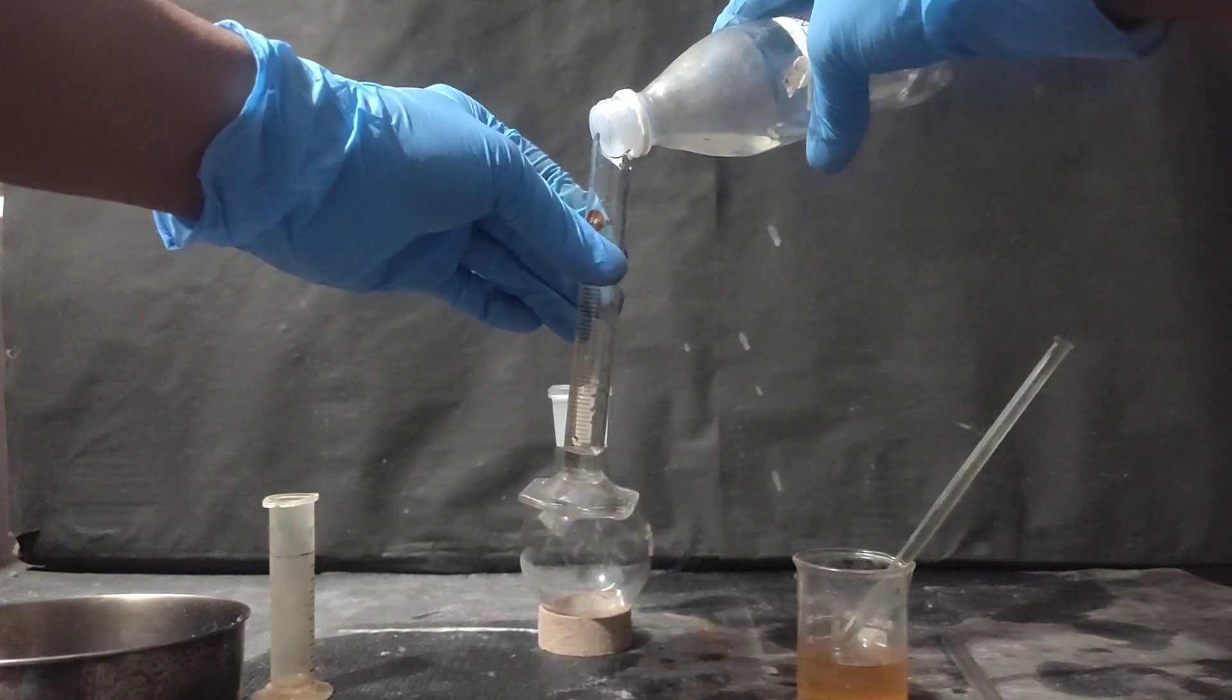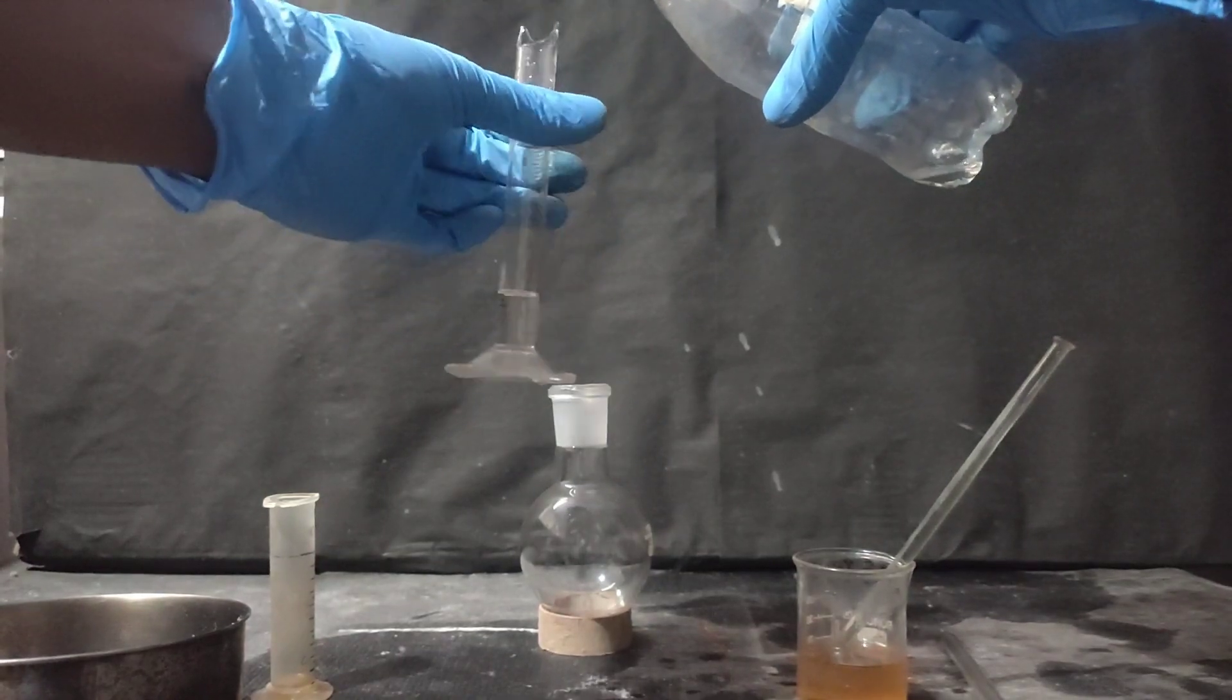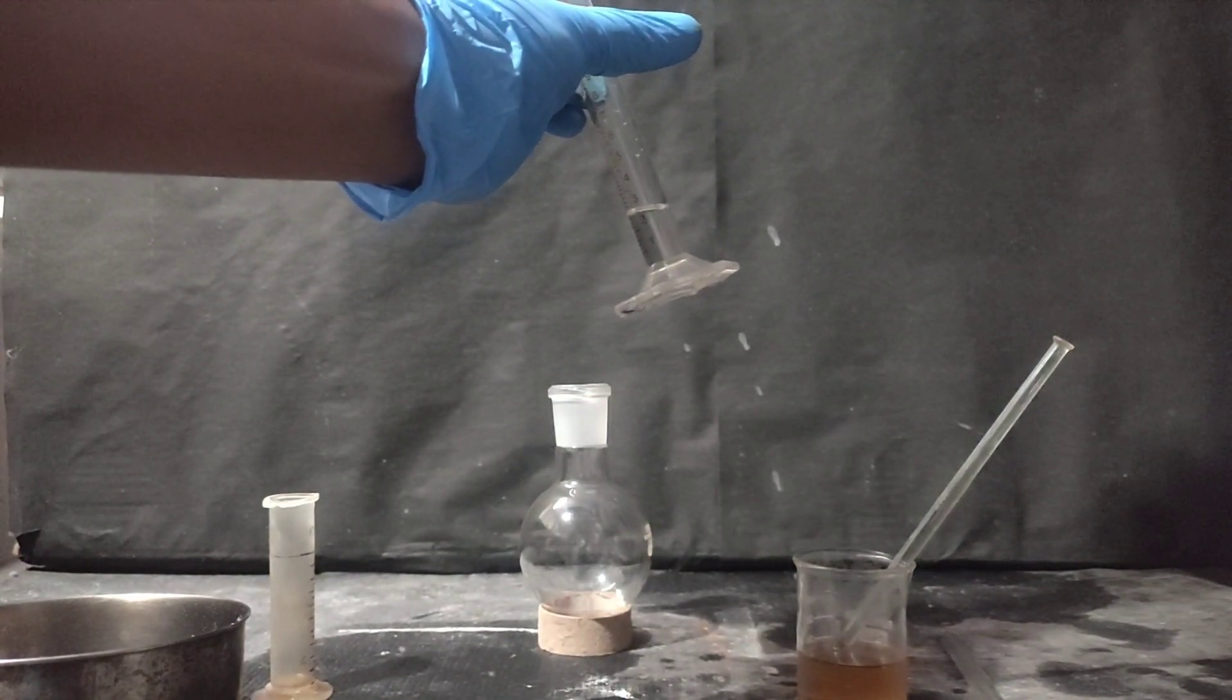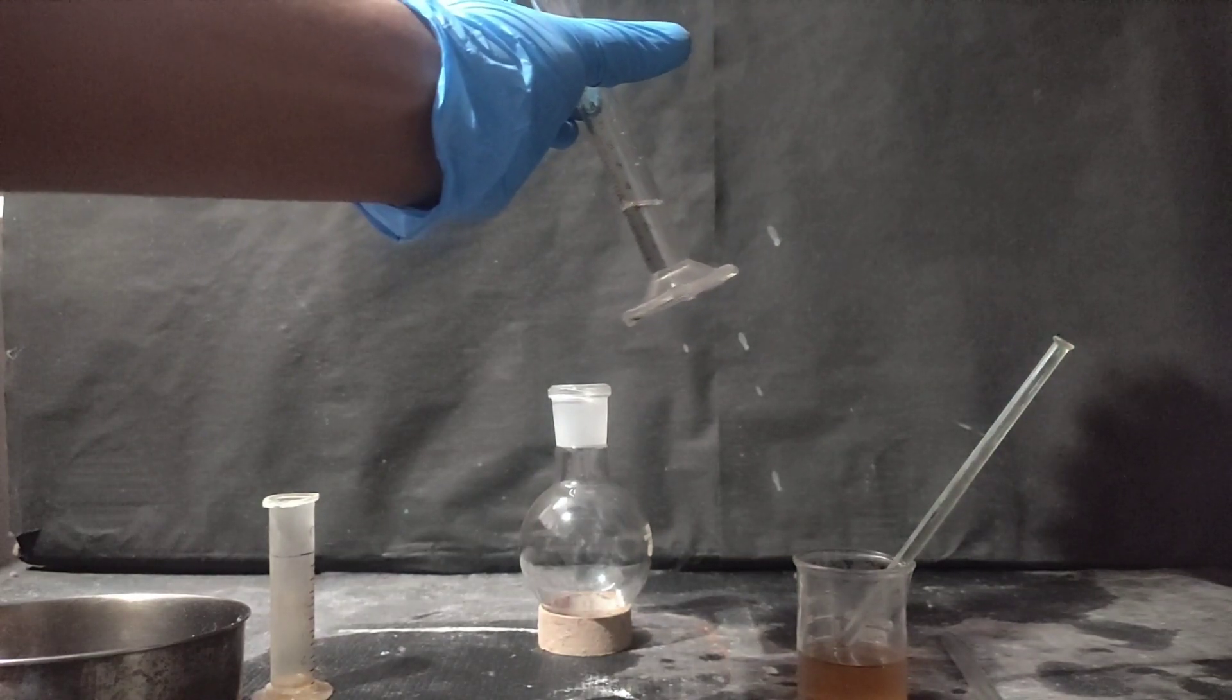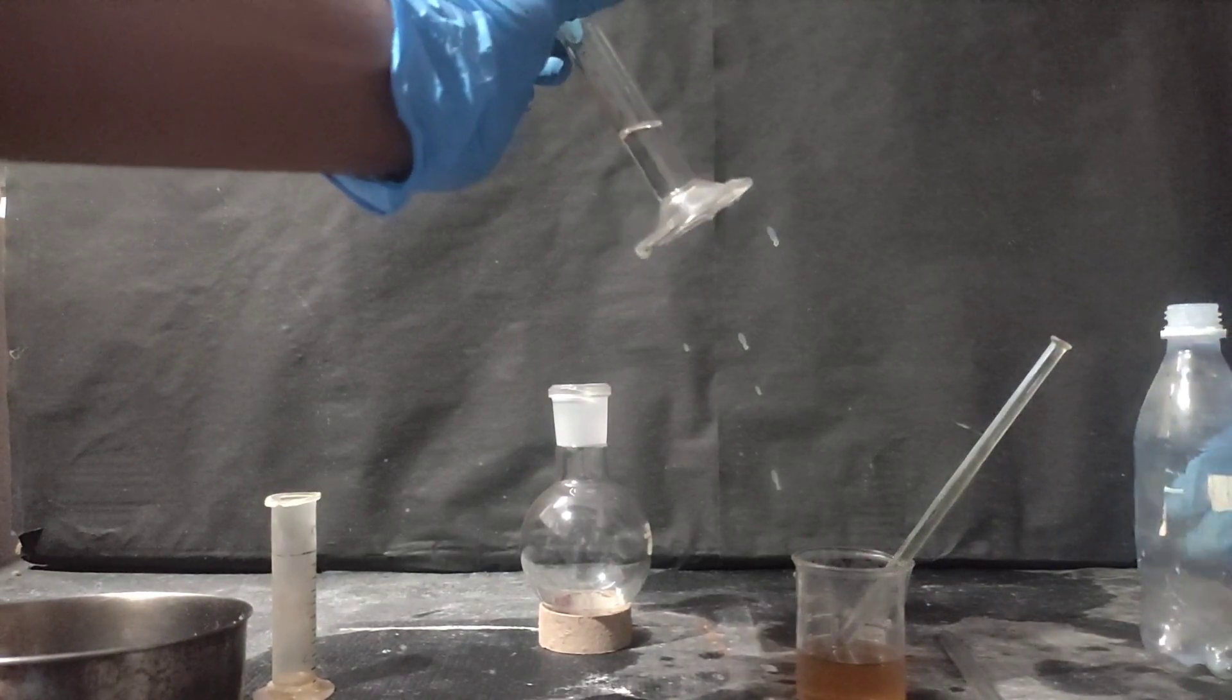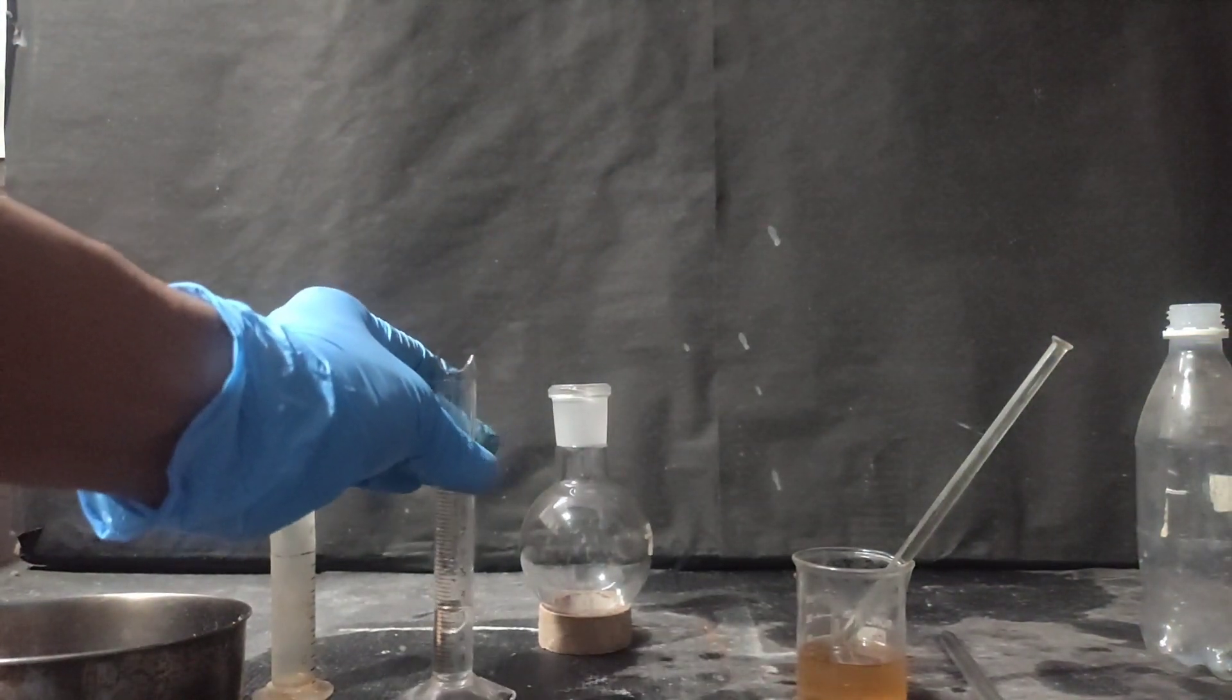Then I measured out benzene in a measuring cylinder. But while pouring the benzene, some benzene fell down. So I got only 3.5 ml of benzene. The reagents were calculated according to 5 ml benzene.